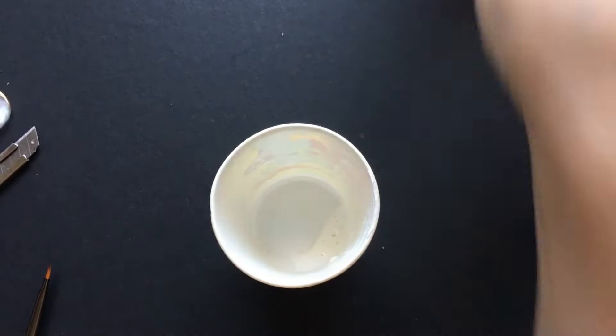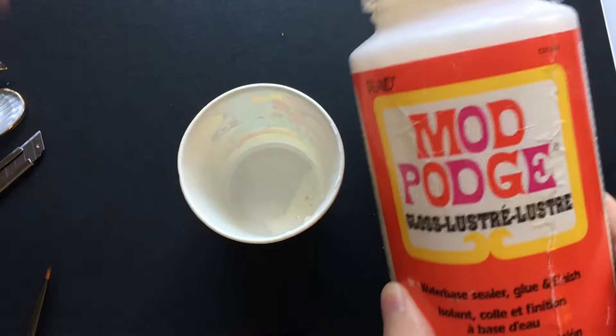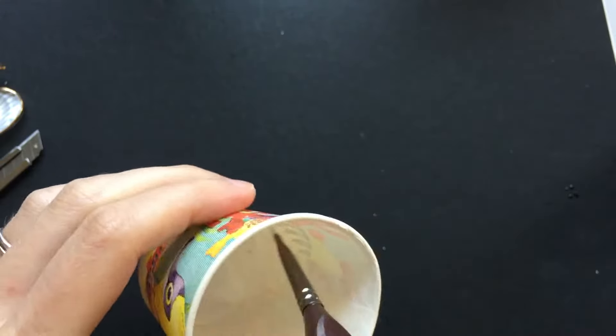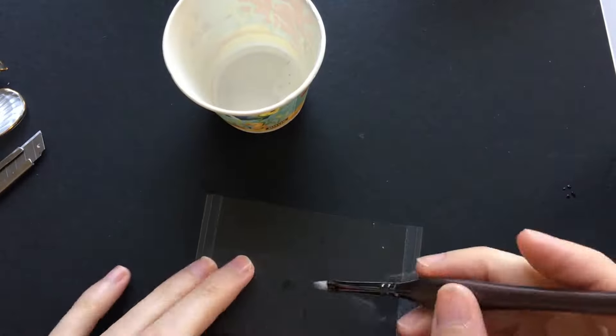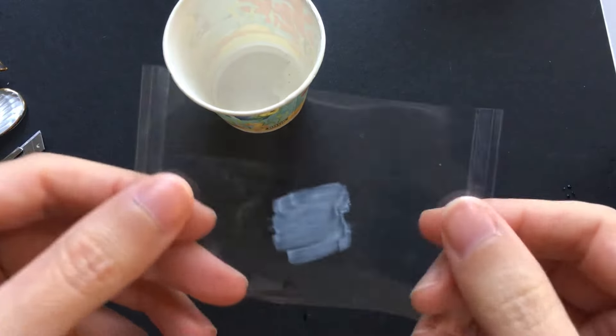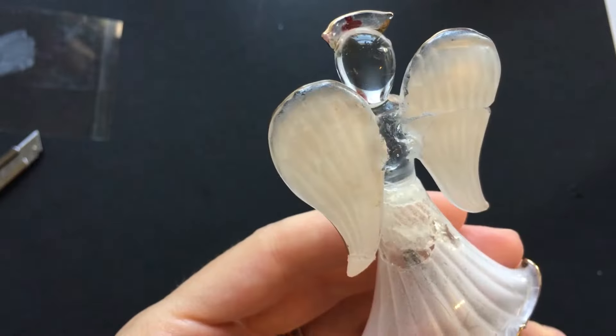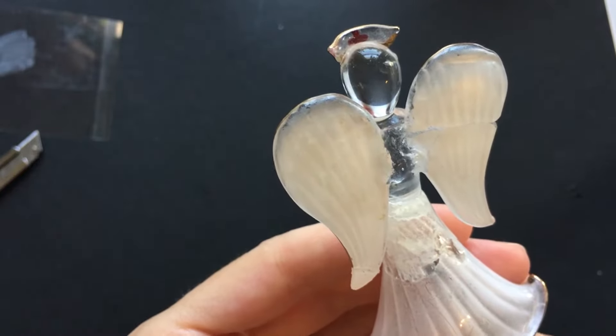I'm going to be using Mod Podge and white acrylic paint to make this sort of frosted glass look. I'm going to be using a piece of plastic to test it out. It looks good so I can go straight to it and paint onto the chip of the wing and on the inside of the dress that needs that frosted glass look.